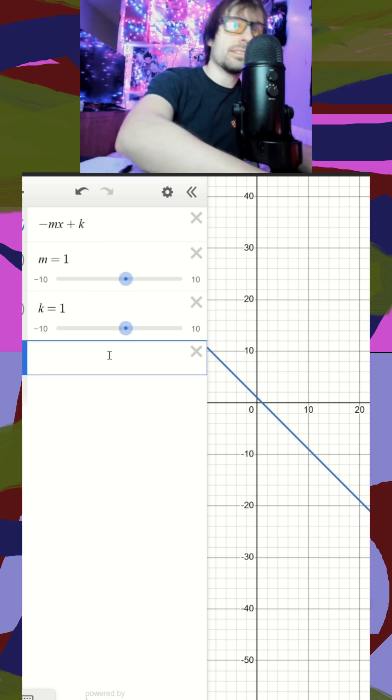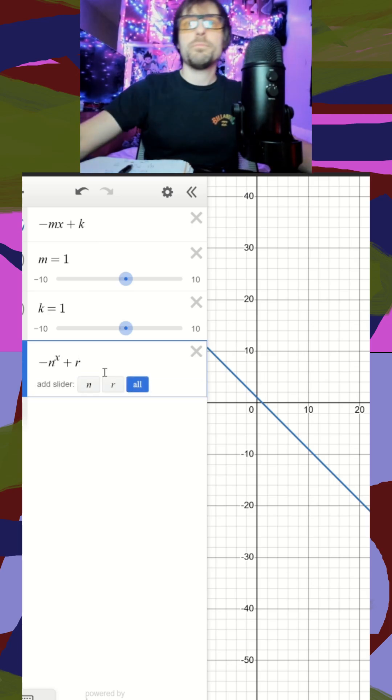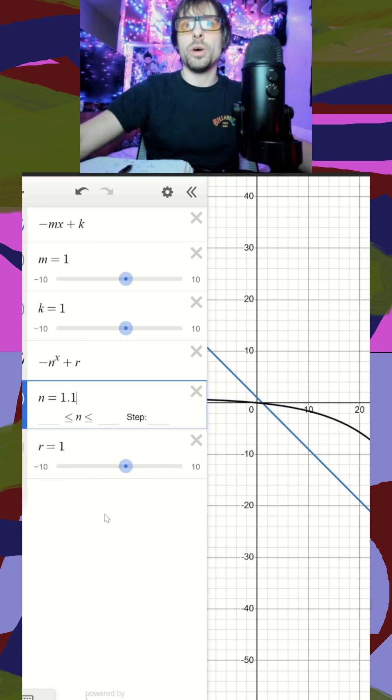Our second equation is going to be negative N to the X plus R, and our only restriction here was that N and R are positive. Specifically, the N has to be greater than 1, so I'll just make it 1.1.